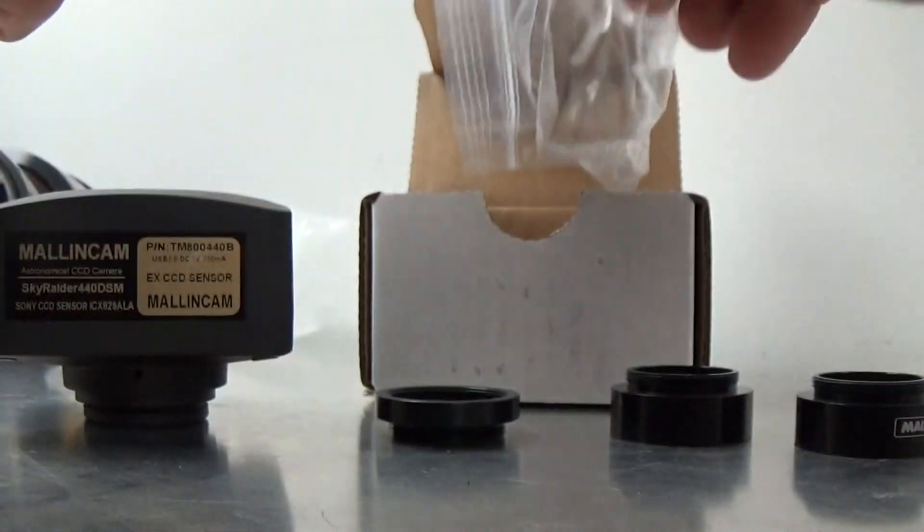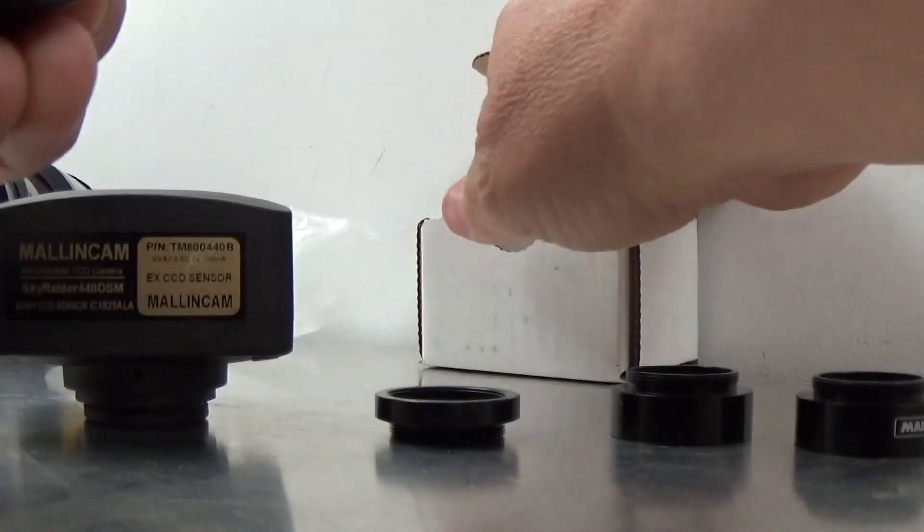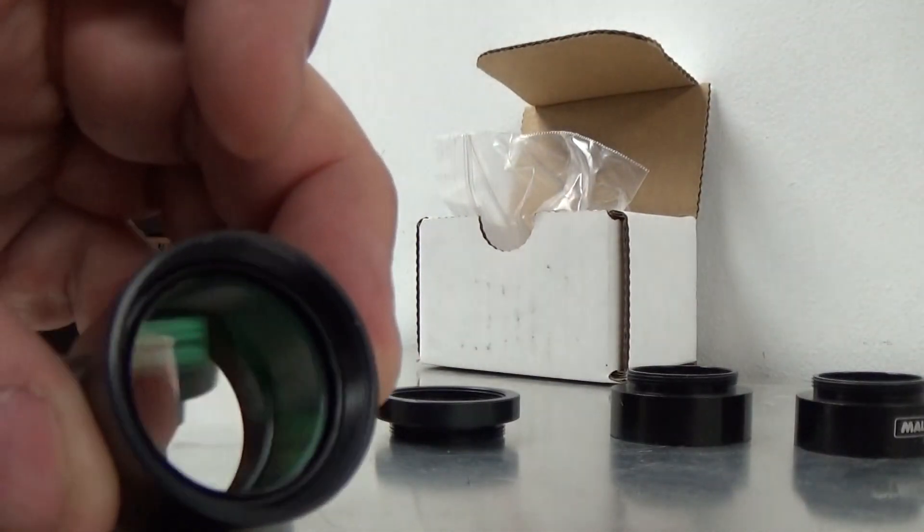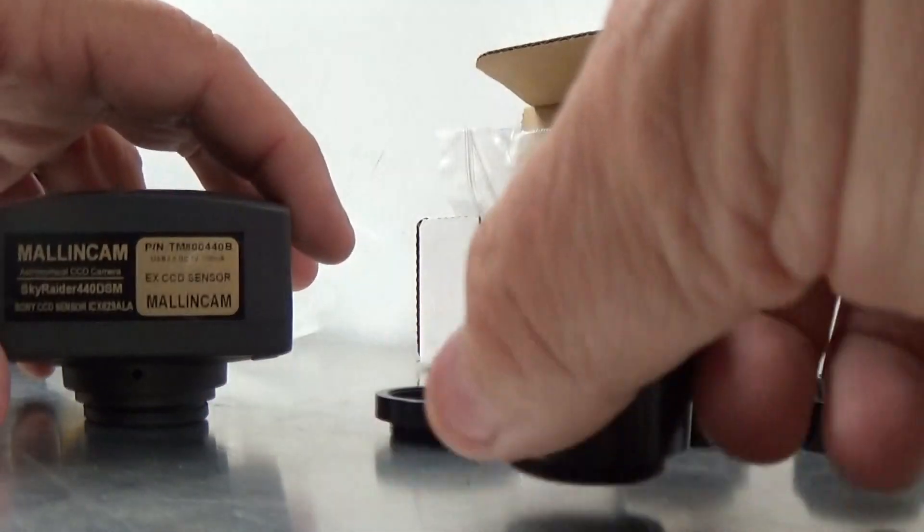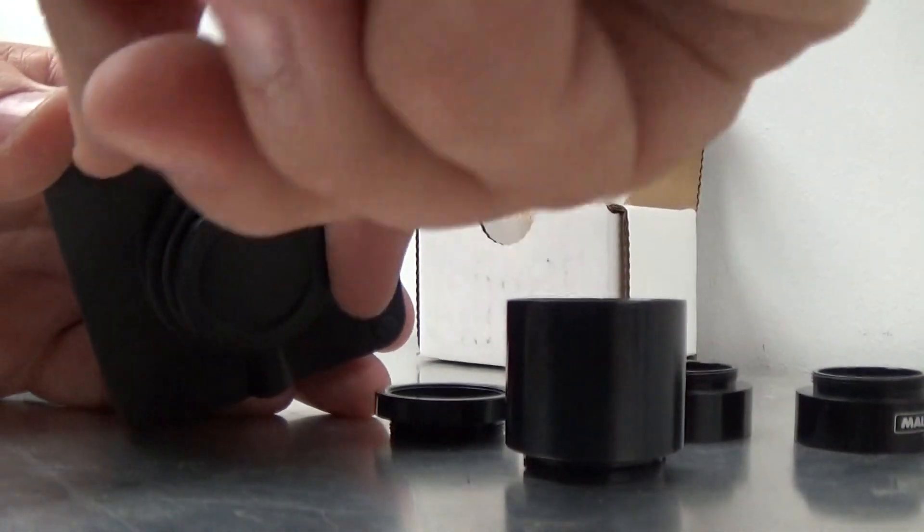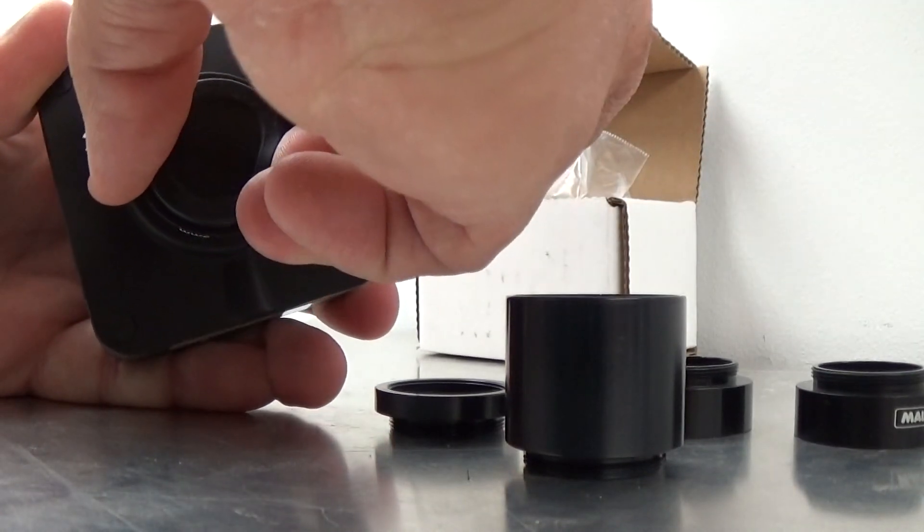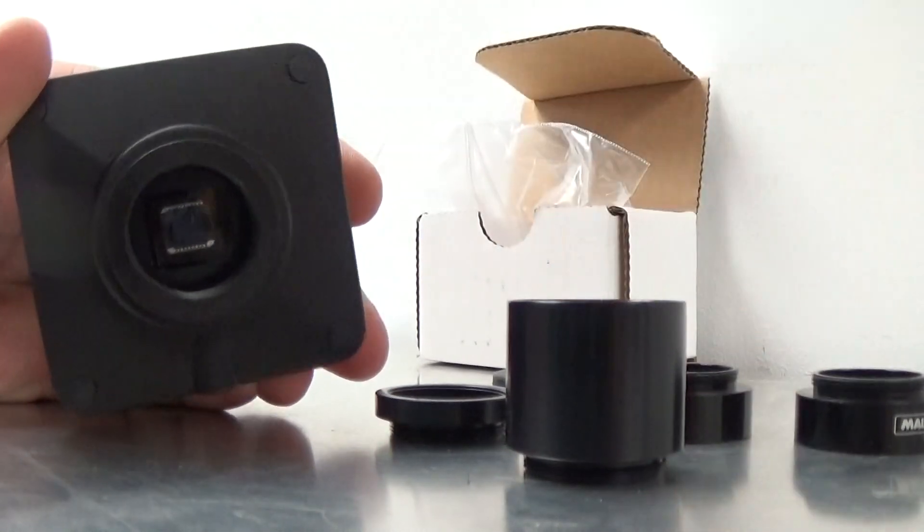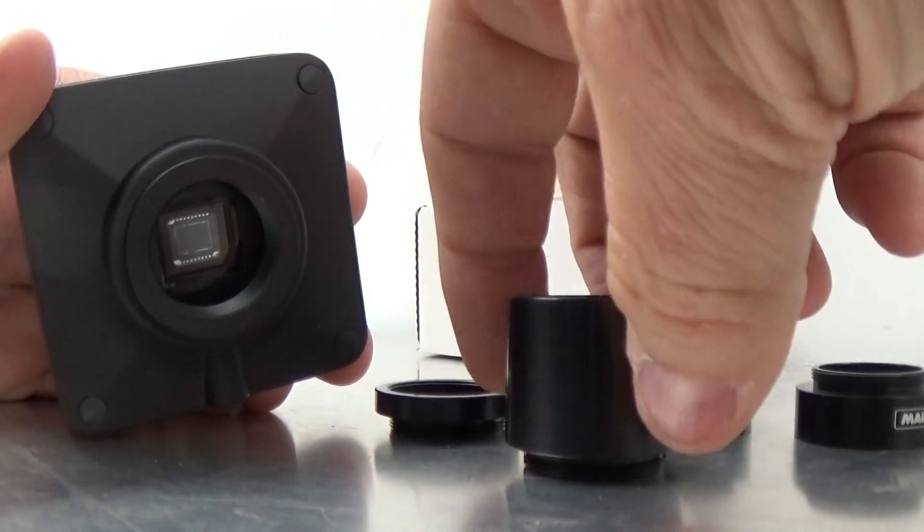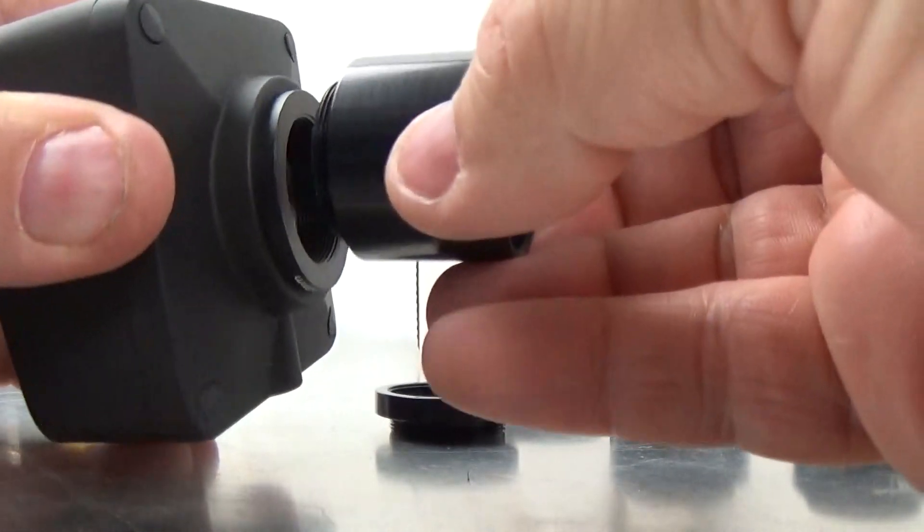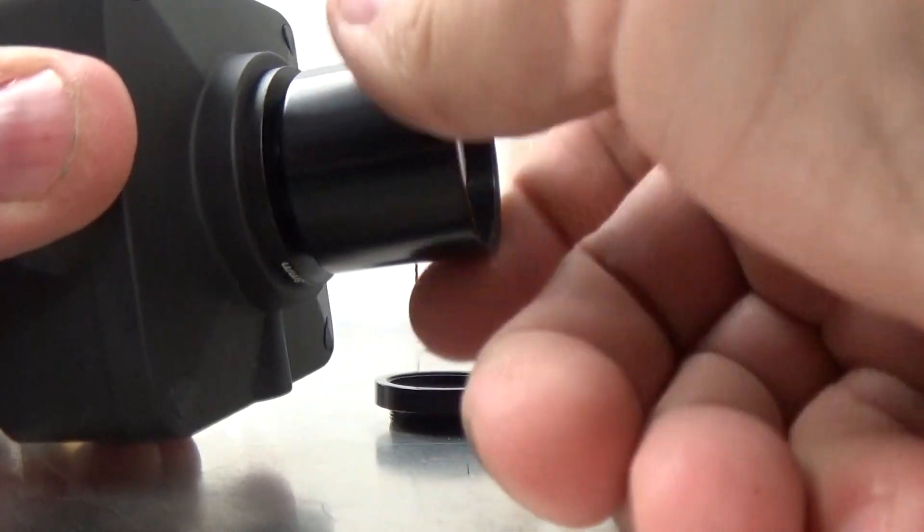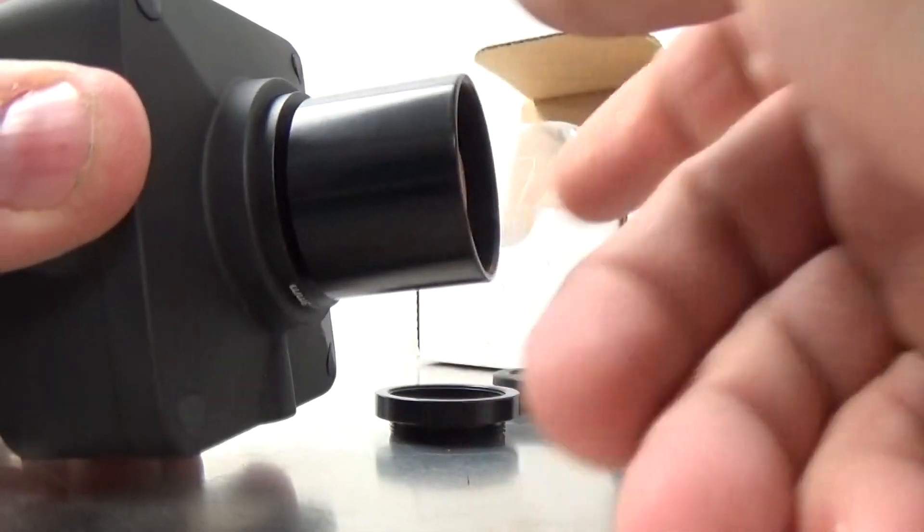Here's the MFR-8 focal reducer multi-coated lens system. What we're going to do is remove the rubber sealed cover from the camera. You could simply screw it in on its own.